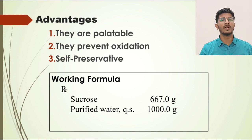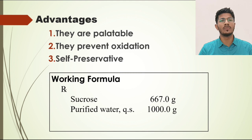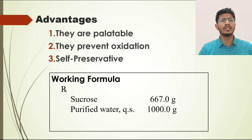As you can see on the screen, the working formula is given according to Indian Pharmacopoeia. Sucrose will be needed — 667 grams for the preparation of 1000 ml of simple syrup. The purified water will be needed as QS (quantity sufficient), which is the abbreviated form of the Latin term meaning that purified water is added to make the final volume up to 1000 ml. You might think about why the formula uses weight by weight rather than weight by volume.